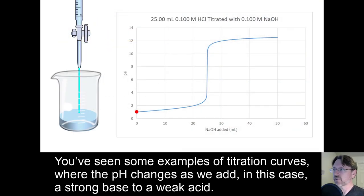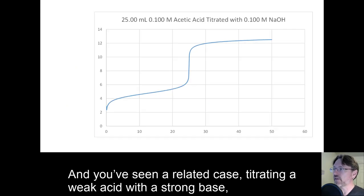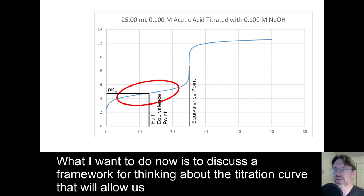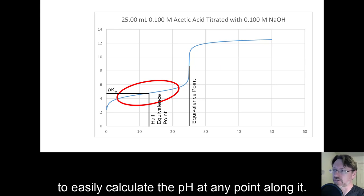You've seen examples of titration curves where the pH changes as we add, in this case, a strong base to a weak acid. And you've seen a related case titrating a weak acid with a strong base, where we have a buffer region centered on the half equivalence point. What I want to do now is discuss a framework for thinking about the titration curve that will allow us to easily calculate the pH at any point along it.